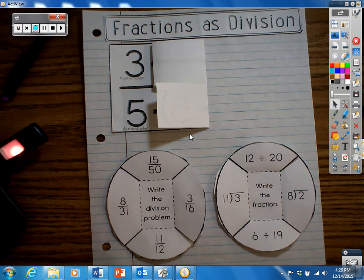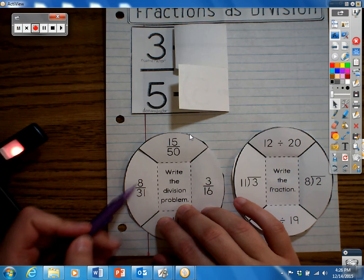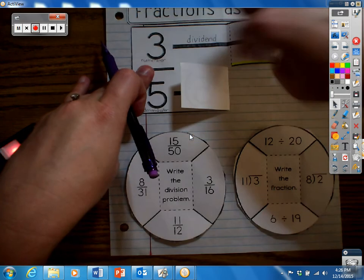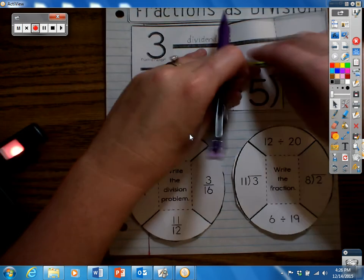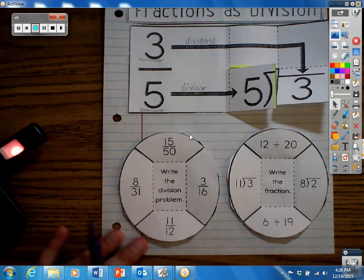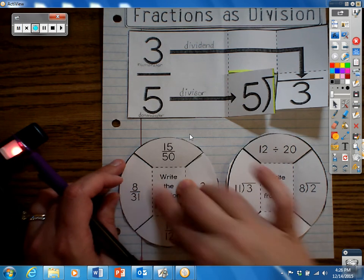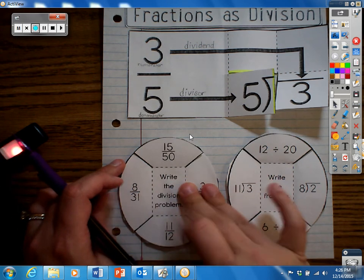Okay, here we go. We're gonna start first with 8 over 31. I'm gonna break apart or open back up my example and we also have our examples that we just did in our previous station, so we should have somewhat of an idea of what we're gonna write here. 8 over 31.